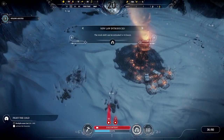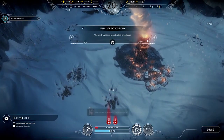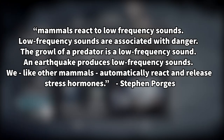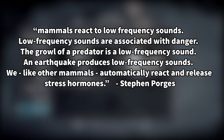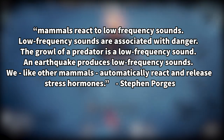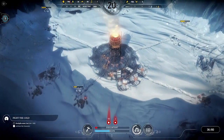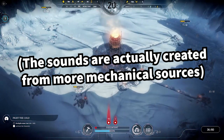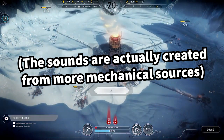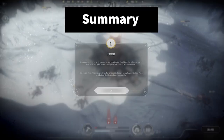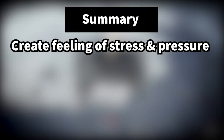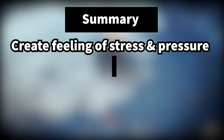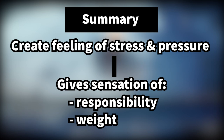The human brain is hardwired to associating certain sounds with feelings. Researcher Steven Porges says mammals react to low frequency sounds — low frequency sounds are associated with danger. The growl of a predator is a low frequency sound, and an earthquake produces low frequency sounds. We, like other mammals, automatically react and release stress hormones. On top of that, the cracks sound a little bit like ice splitting, which plays into the lore and the theme of the game. Ice cracking generally is another sign of danger, and standing on thin ice metaphorically means that a single mistake could mean the end. So to sum up, the sounds in the book of laws psychologically create the feeling of stress and pressure, which gives a sensation of responsibility and weight with each mouse click.